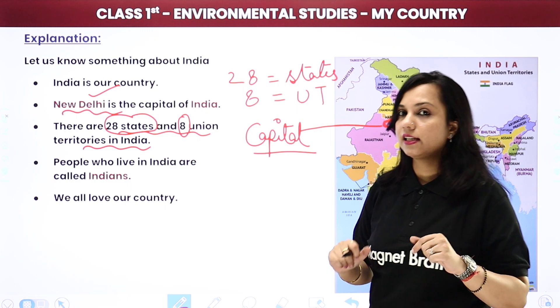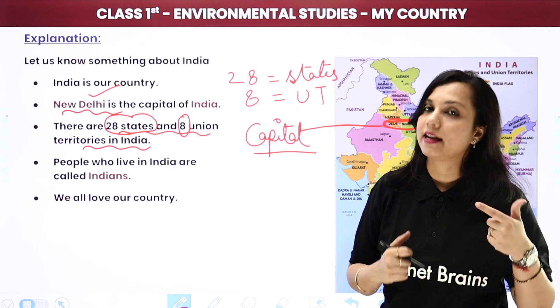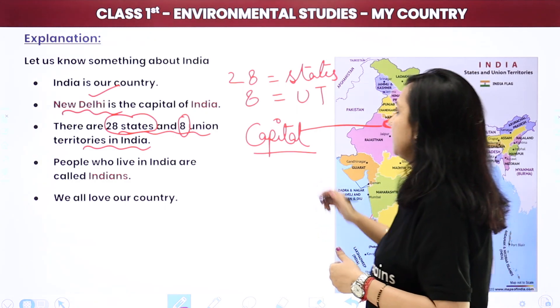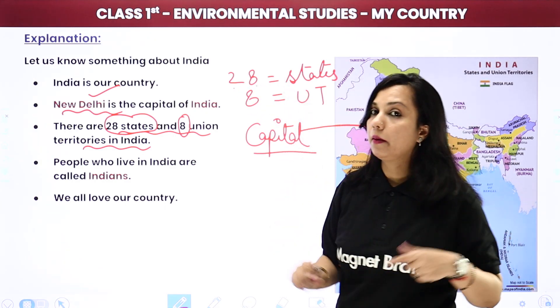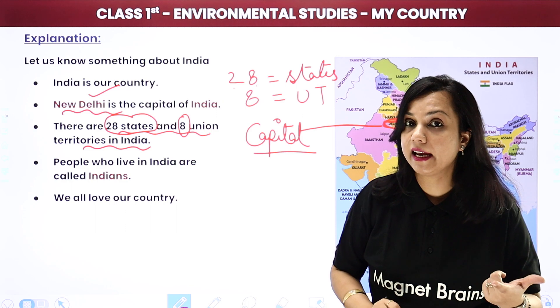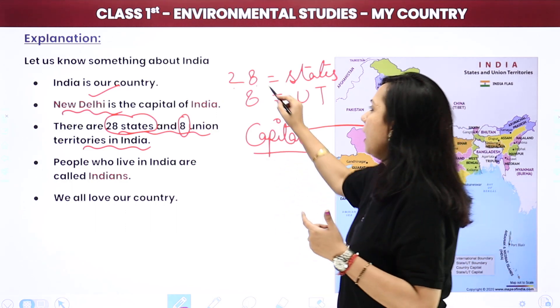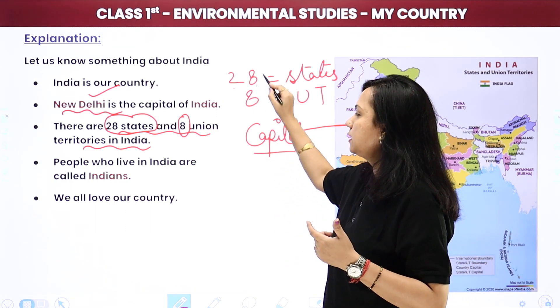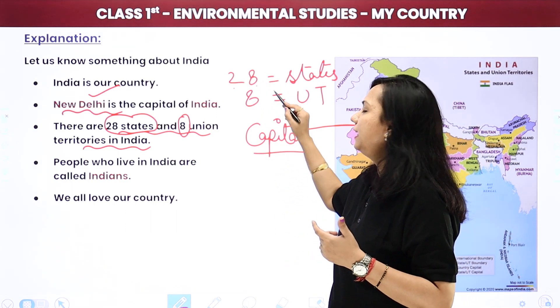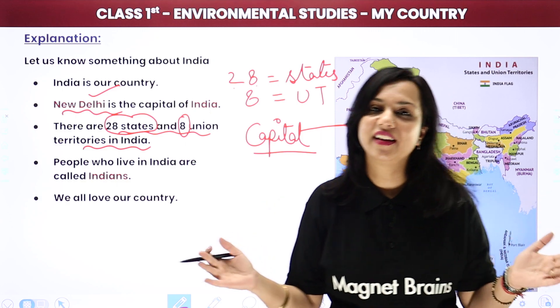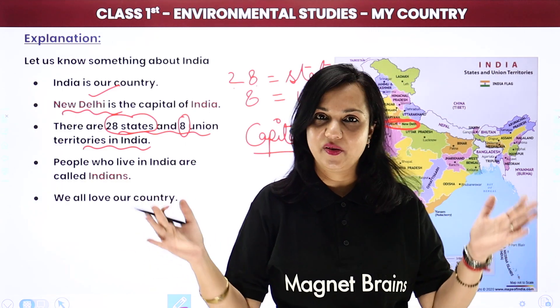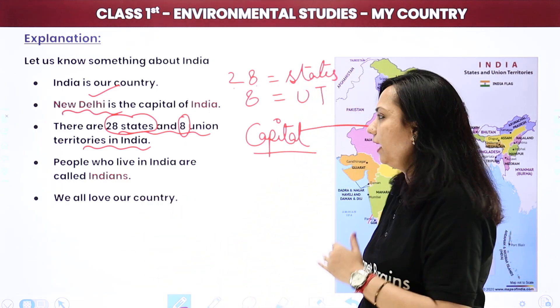Isko kaise yaad rakh sakte hain? Isko aise yaad rakh sakte hain ki 2 aur 8 aapka ban gaya 28, aur 8 jo last mein hai, utne hi humari country mein hain union territories.